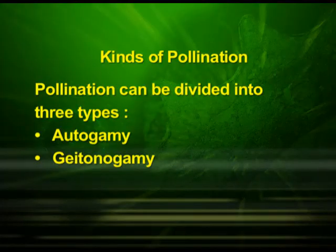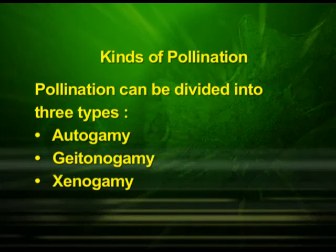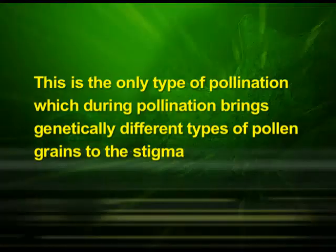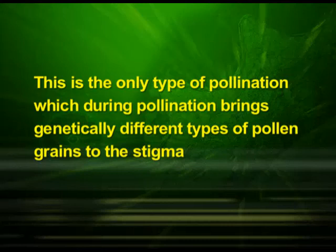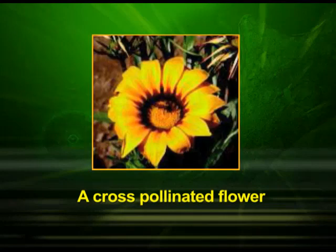Now let us see the third kind of pollination: xenogamy. Here, transfer of pollen grains occurs from the anther to the stigma of a different plant. This is the only type of pollination which brings genetically different types of pollen grains to the stigma. We can observe a cross-pollinated flower in this photograph.